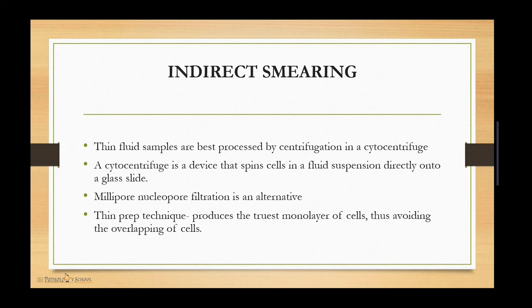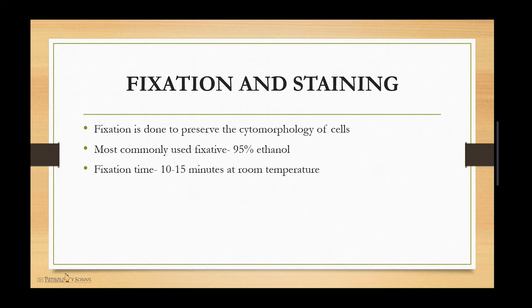Thin fluid samples are best processed by centrifugation in a cytocentrifuge, which spins cells in fluid suspension directly onto a glass slide. Other methods include Millipore/Nucleopore filtration and the ThinPrep technique, which produces the truest monolayer of cells, thus avoiding overlapping of cells.